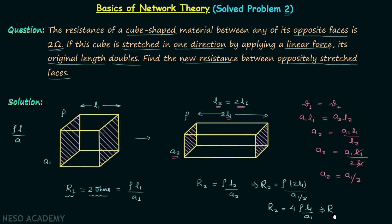The new resistance R2 equals 4 multiplied by 2, which is 8 ohms. So this is our answer.